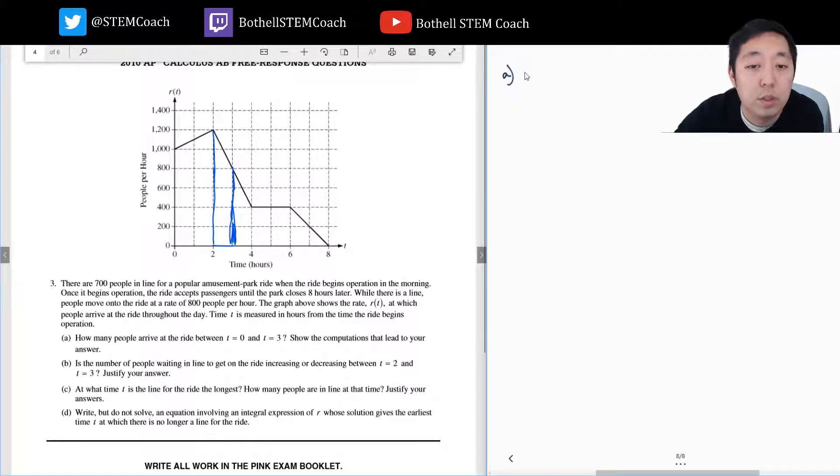So for part a, I'm going to do one half the width. This width is two. The heights are a thousand and twelve hundred. Plus one half. This width is one. And the heights, plus one half times one, twelve hundred and eight hundred. Just doing area under the curve, but I'm doing it graphically. And I can do this by hand now. Because these cancel, so this is twenty-two hundred plus two thousand plus a thousand. So that equals thirty-two hundred people.